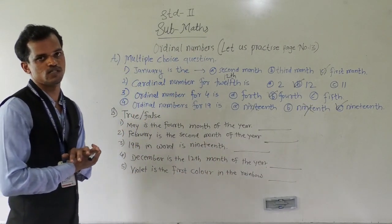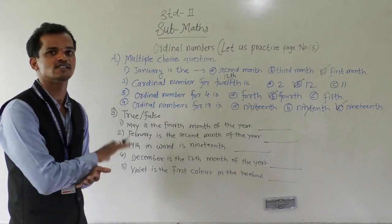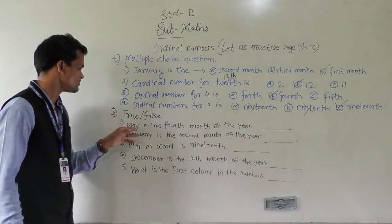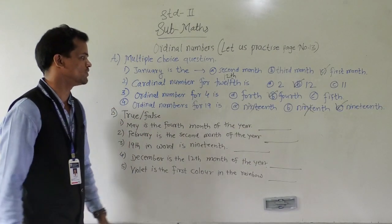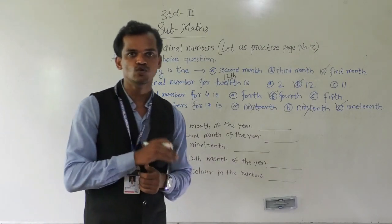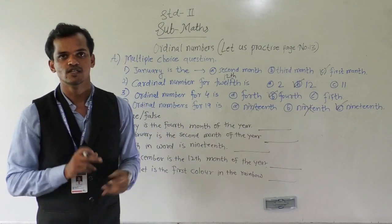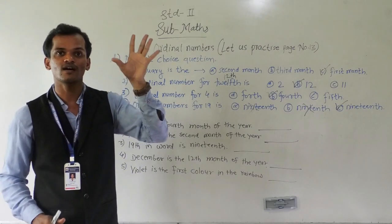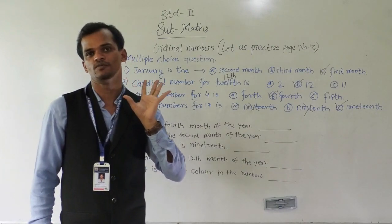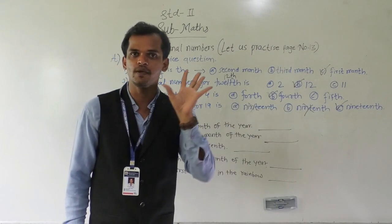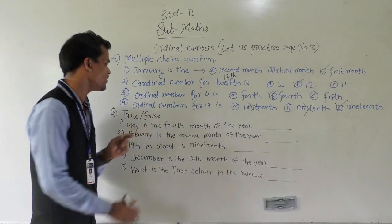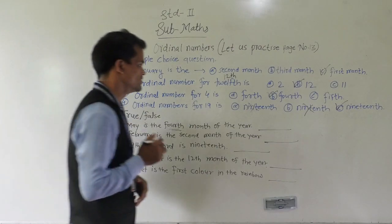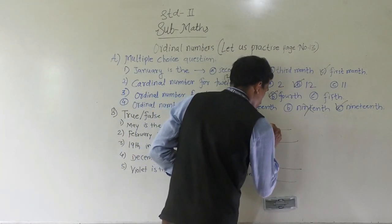Next: true or false. Whether this sentence is correct or wrong, you write there. May is the 4th month of the year. You know the proper sequence: January, February, March, April, and May. May comes at the 5th position, and here it is given May is the 4th — so this statement is wrong, meaning false. Write: false.